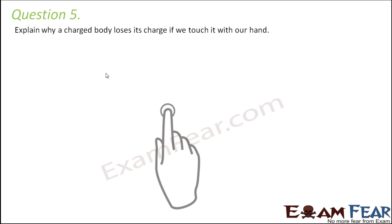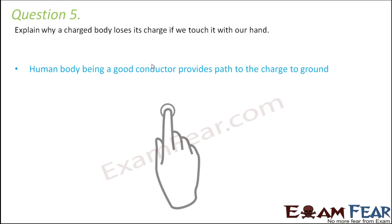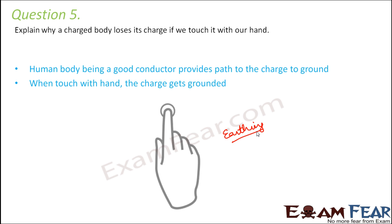Question number 5: Explain why a charged body loses its charge if we touch it with our hand. This is the concept of earthing. When we touch it, the human body is a good conductor, so we provide a path for the charge to go to the ground. There will be a flow of charge through our body to the ground. All the excess charge flows through our body to the ground, and this is known as discharge of the body — the charge gets grounded.